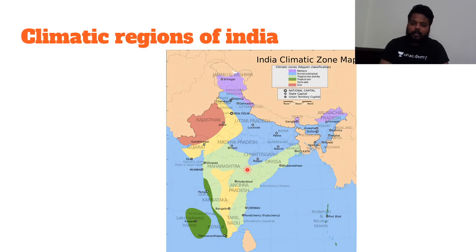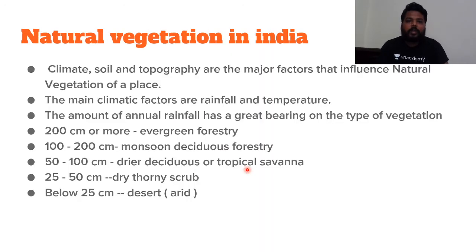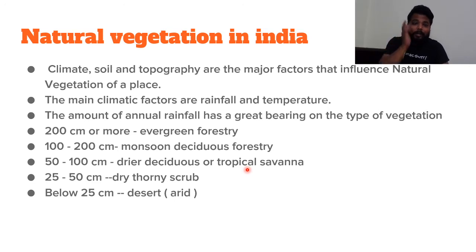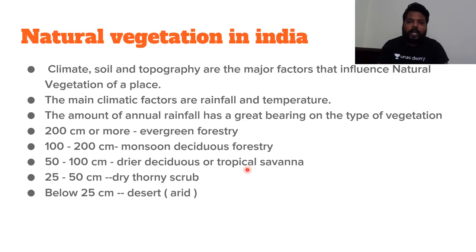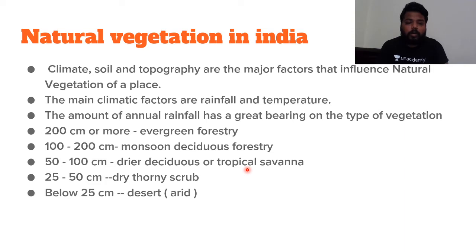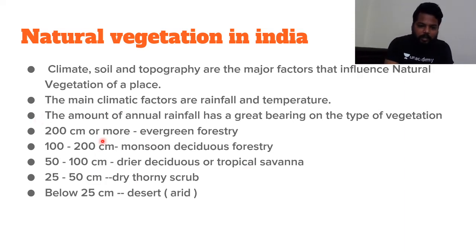Natural vegetation of India: climate, soil, and topography are the major factors that influence natural vegetation. Climate includes rainfall and temperature. In India, the natural vegetation is dominated by climate, soil, and topography. The main climatic factors are rainfall and temperature — on the basis of rainfall itself we generally calculate the vegetation type.